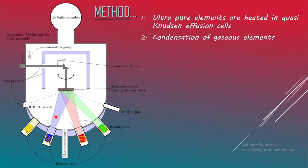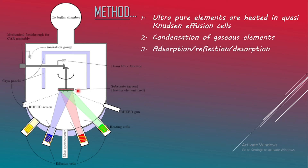In the first step, target materials are evaporated or sublimed from the effusion cells. In the second step, the gaseous elements condense onto the wafer where they may react with each other. For example, with gallium arsenide: gallium in one effusion cell and ultra-pure arsenic in another are heated and sublimed, then both condense over the substrate, reacting near the substrate to finally form a single crystal of gallium arsenide.